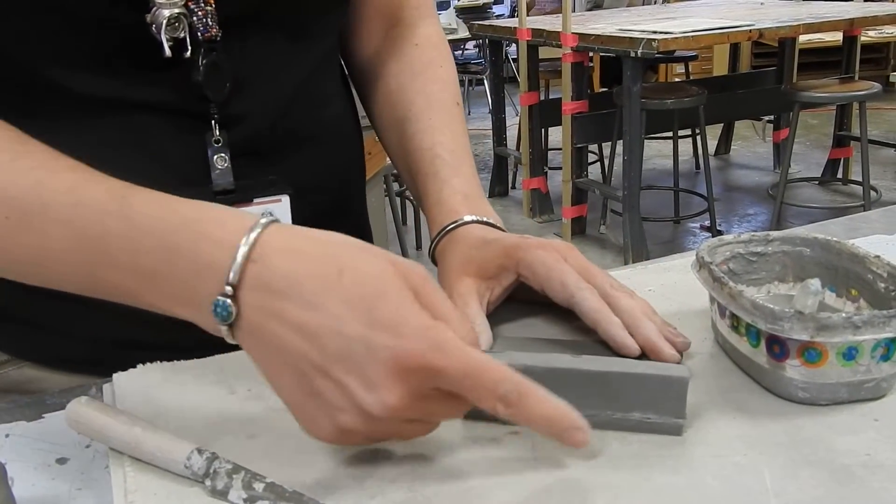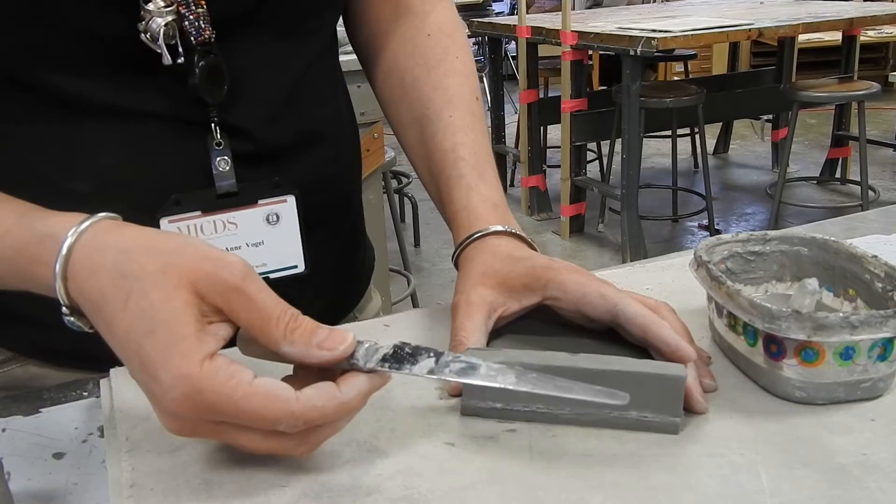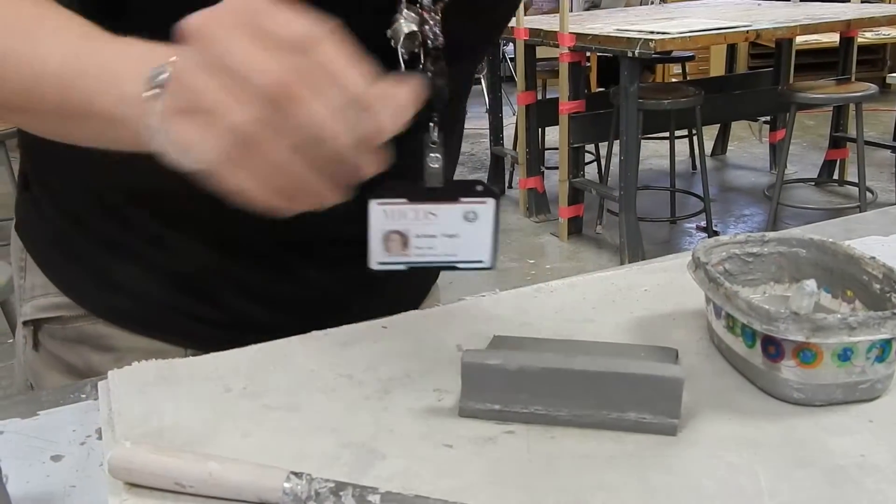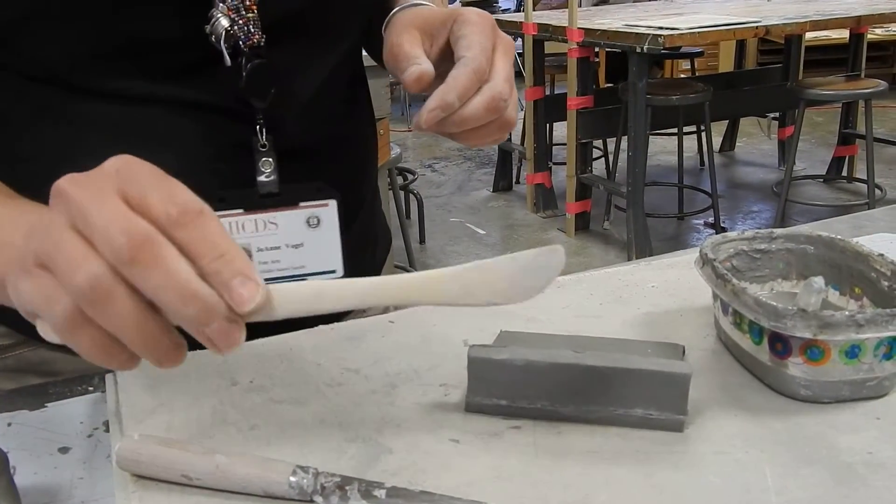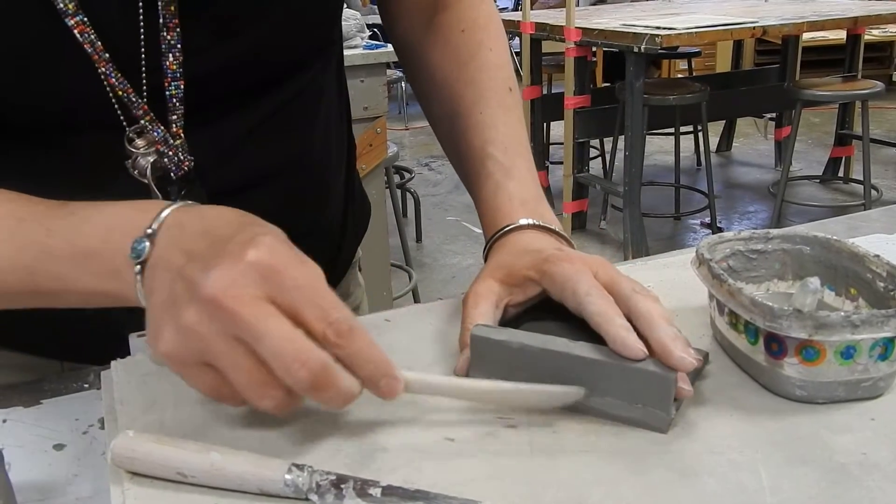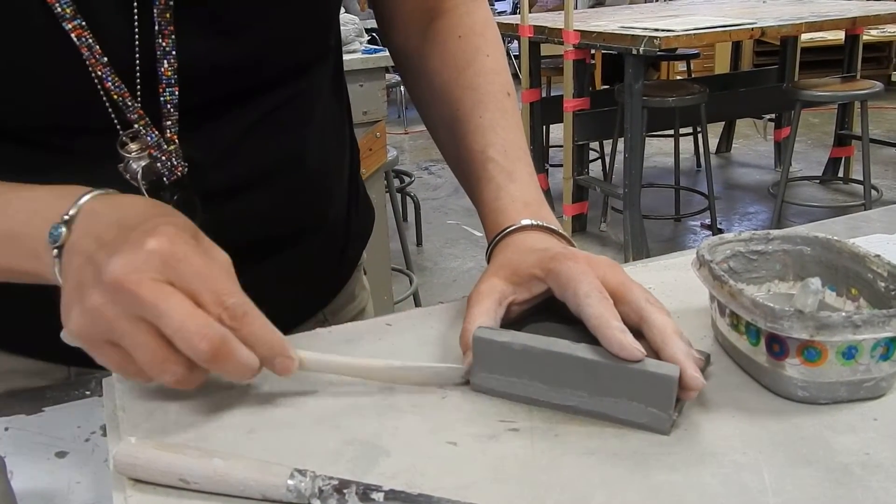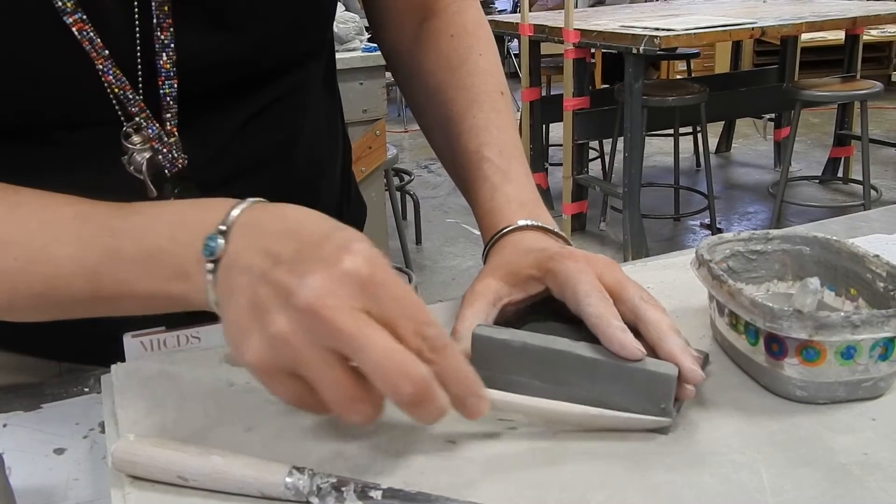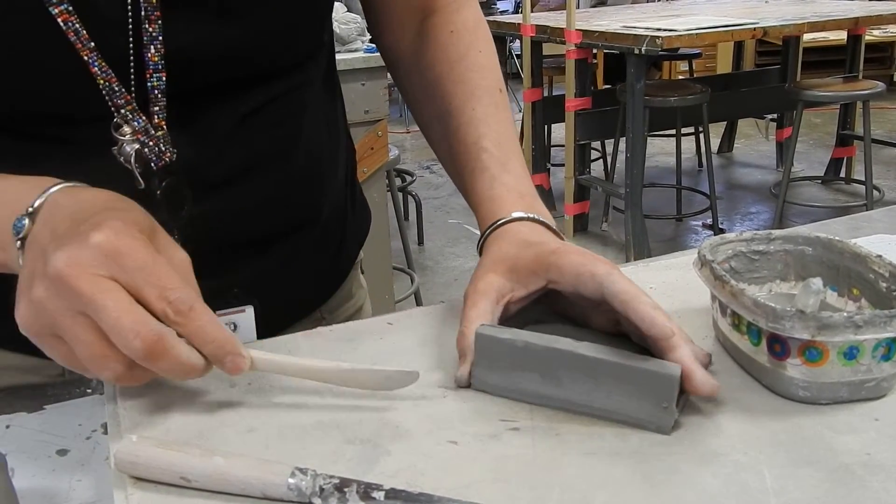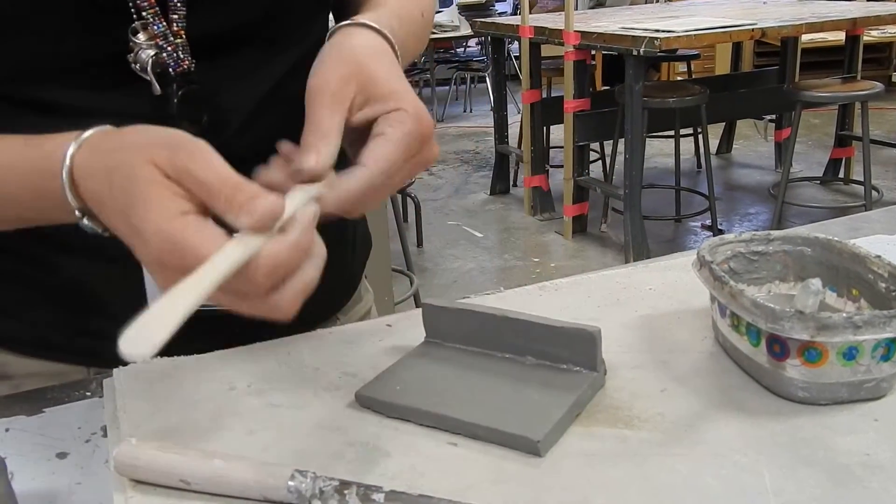And then you can use a tool to smooth it out. You could use a fettling knife like this. You could use a wooden tool like this. Smooth that joint out so that it's connected well. Don't forget the other side.